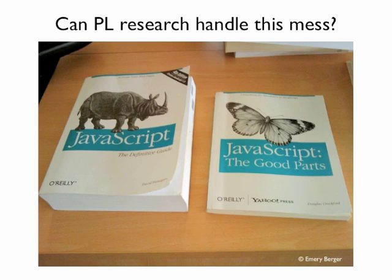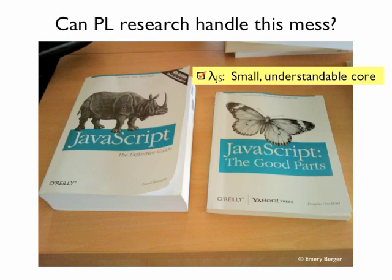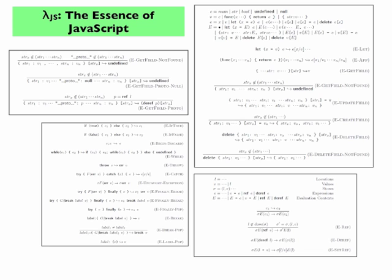So, we did just that. We developed LambdaJS, a small tractable core calculus for JavaScript. Like any good core calculus, it fits on a slide. Just about. But, the JavaScript specification is over 200 pages long. So clearly, this core calculus omits many, many details of JavaScript.